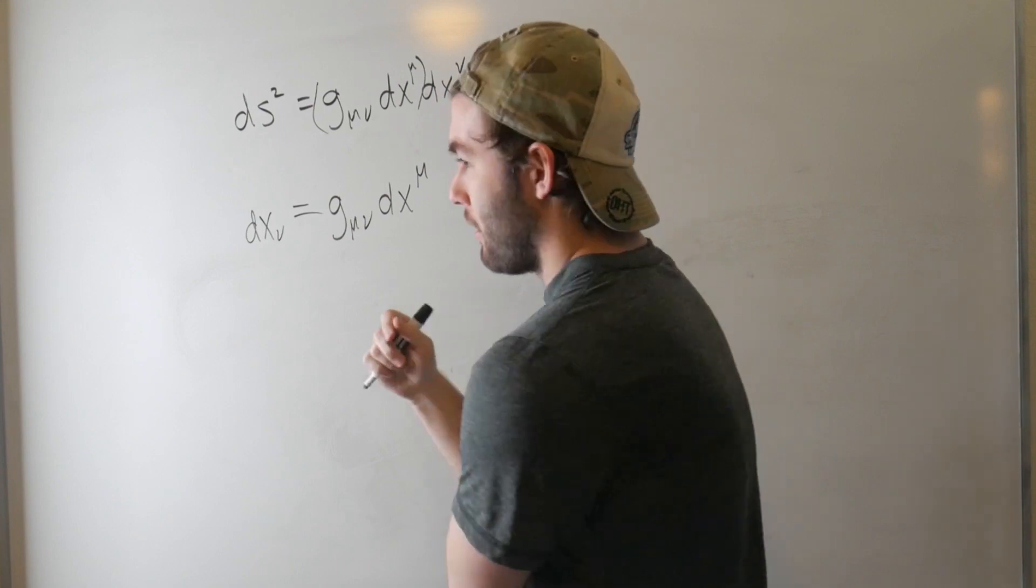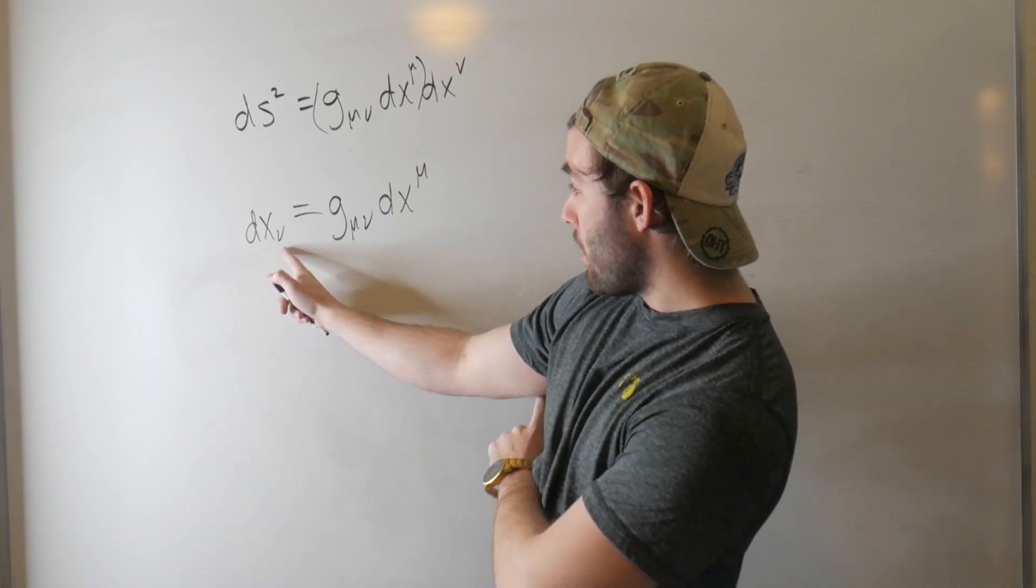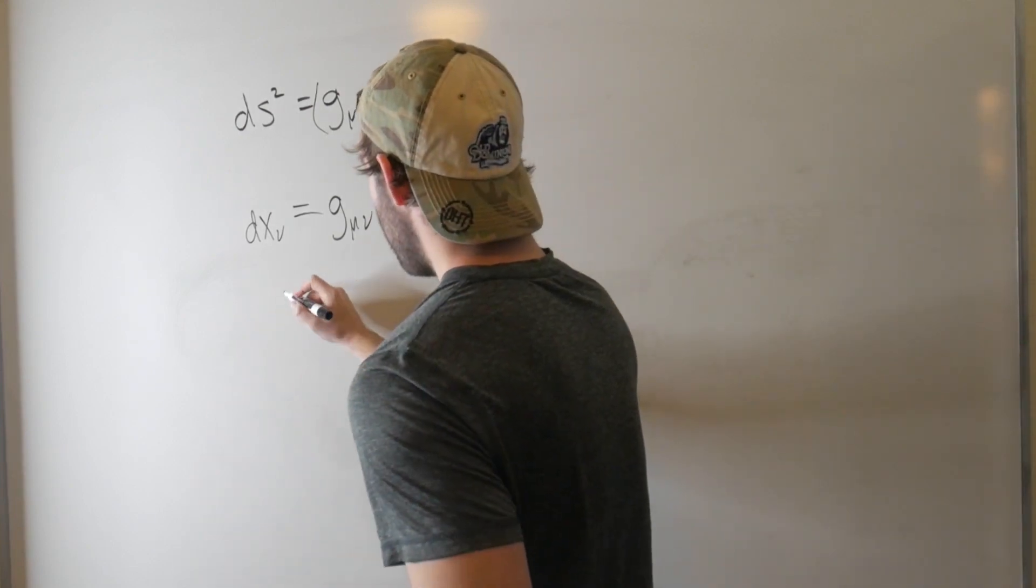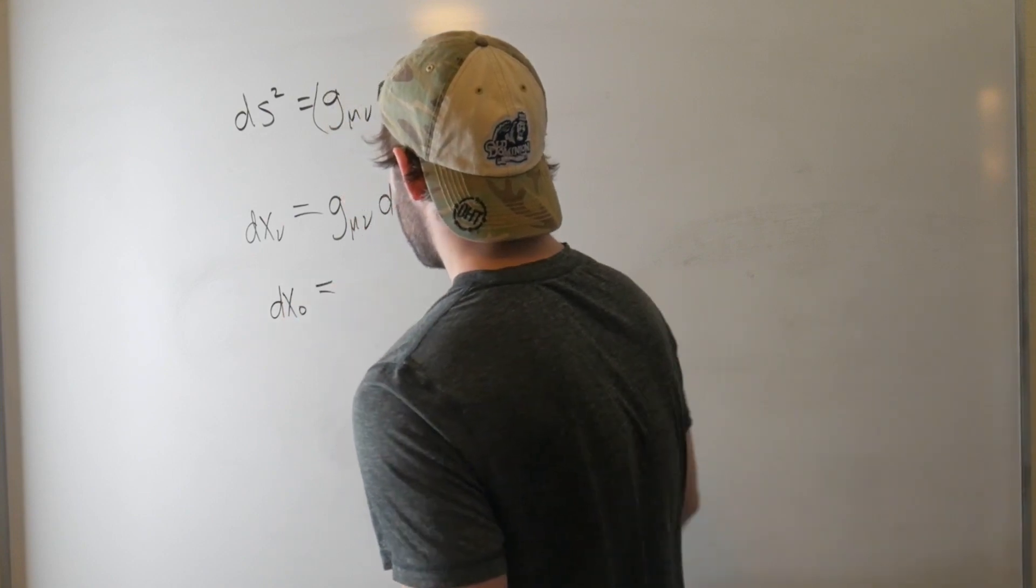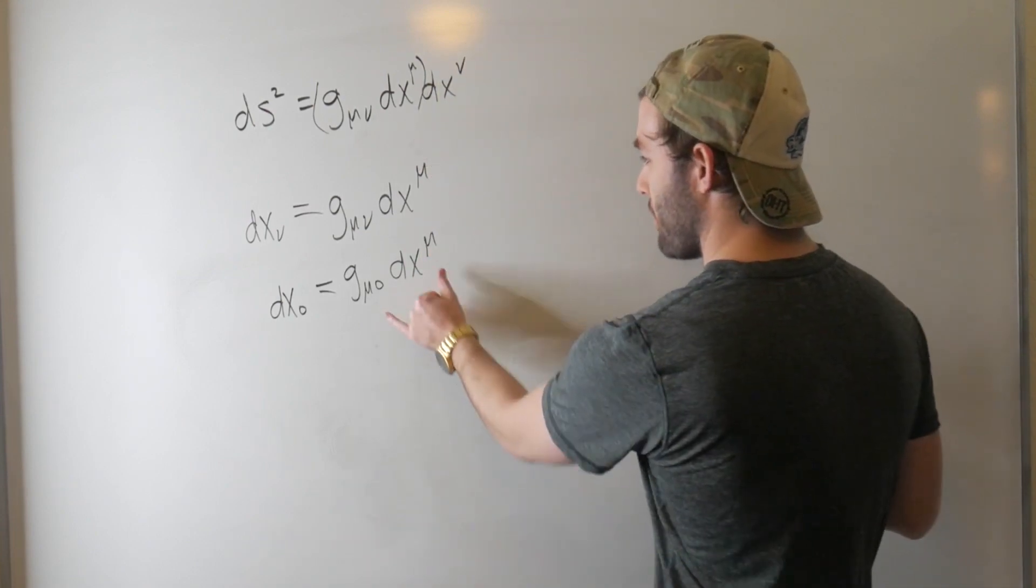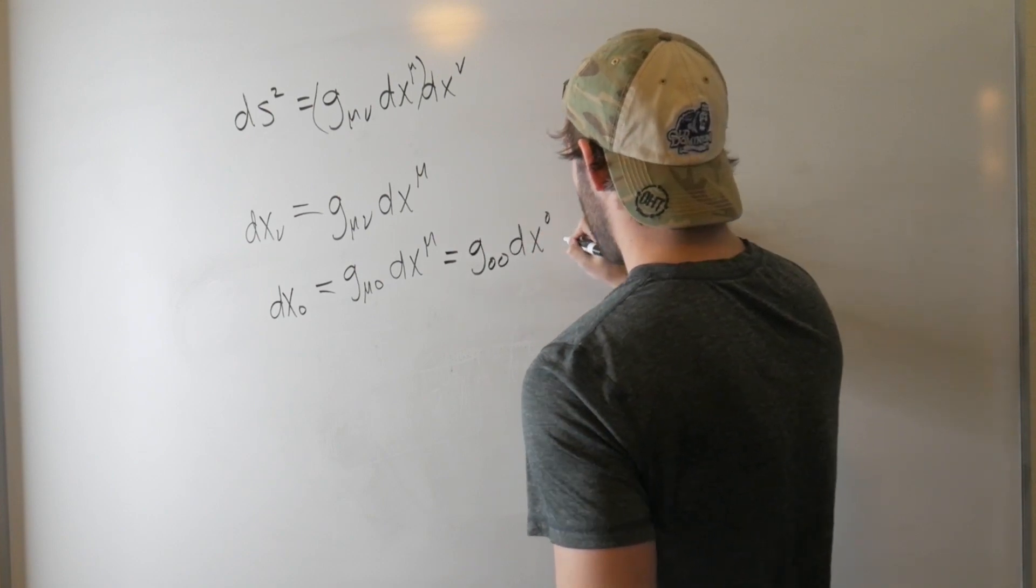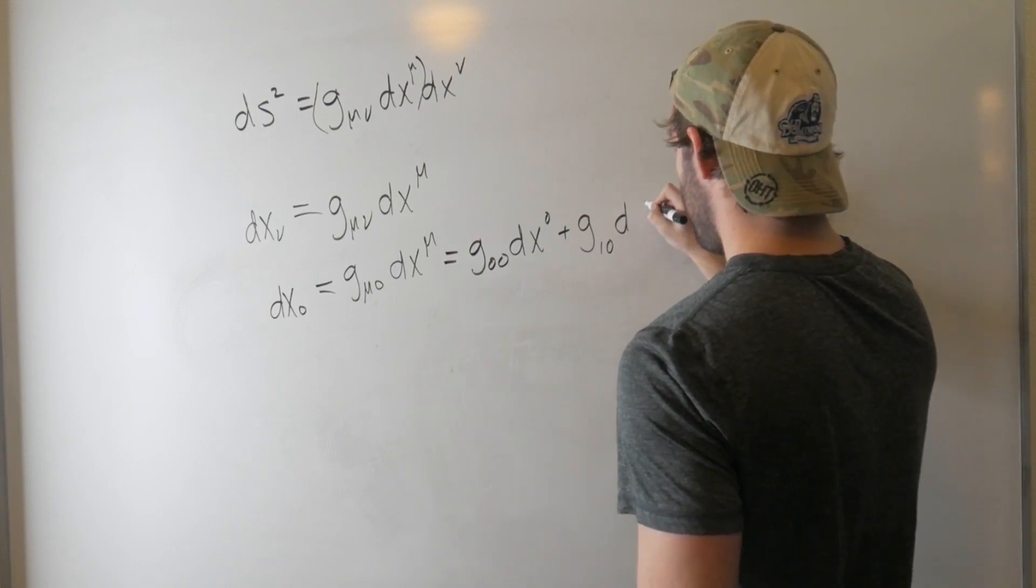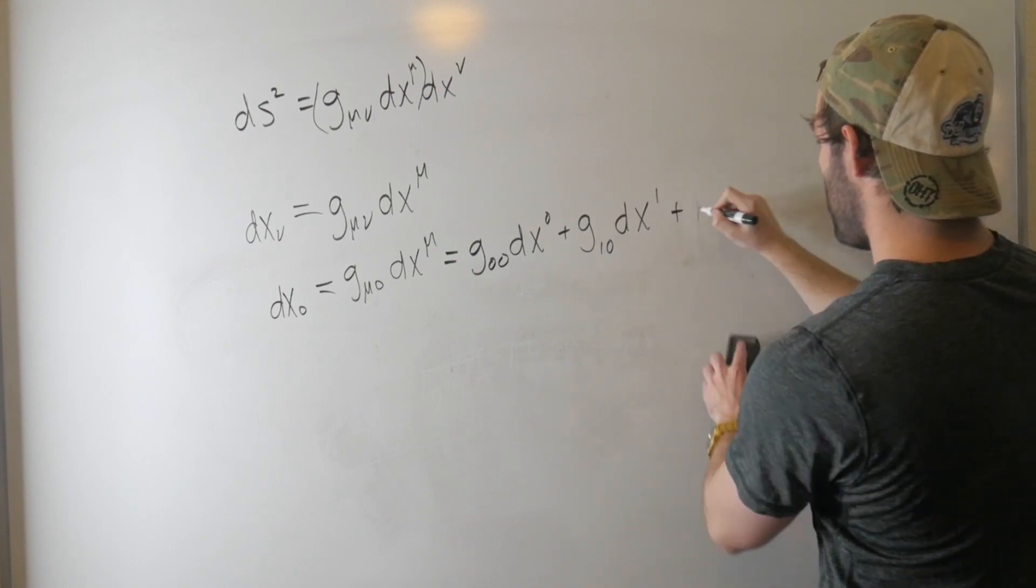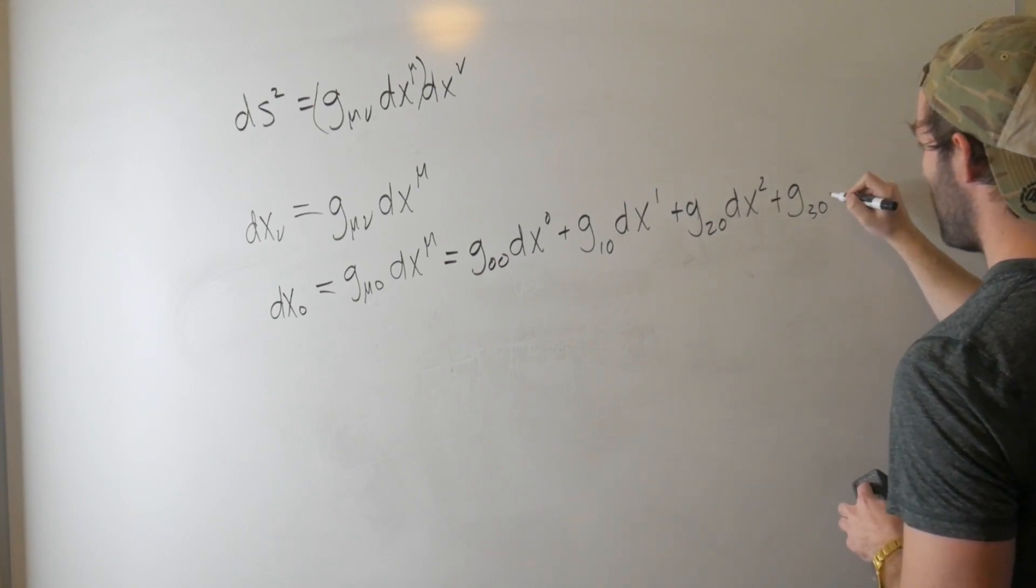And we're free to look at whatever component we'd like. For example, let's consider the case where we're back in special relativity and we're looking at the time component, which would be ν equal to zero. And let's work in a rectangular, just a Cartesian kind of coordinate system. So we've got dx_0 is equal to g_μ0 dx^μ and we're summing over μ. Okay, so this is equal to g_00 dx^0, plus g_10 dx^1, plus g_20 dx^2, and lastly, g_30 dx^3.